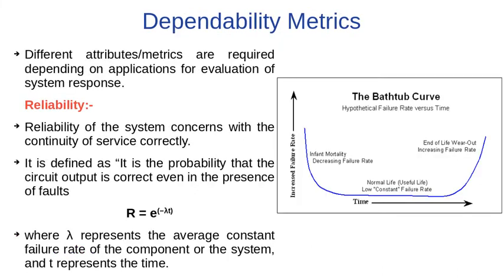There are different attributes and metrics required depending on the application for evaluation of system response. The first one is reliability, which is an important dependability matrix. The reliability of a system is concerned with the continuity of correct service.